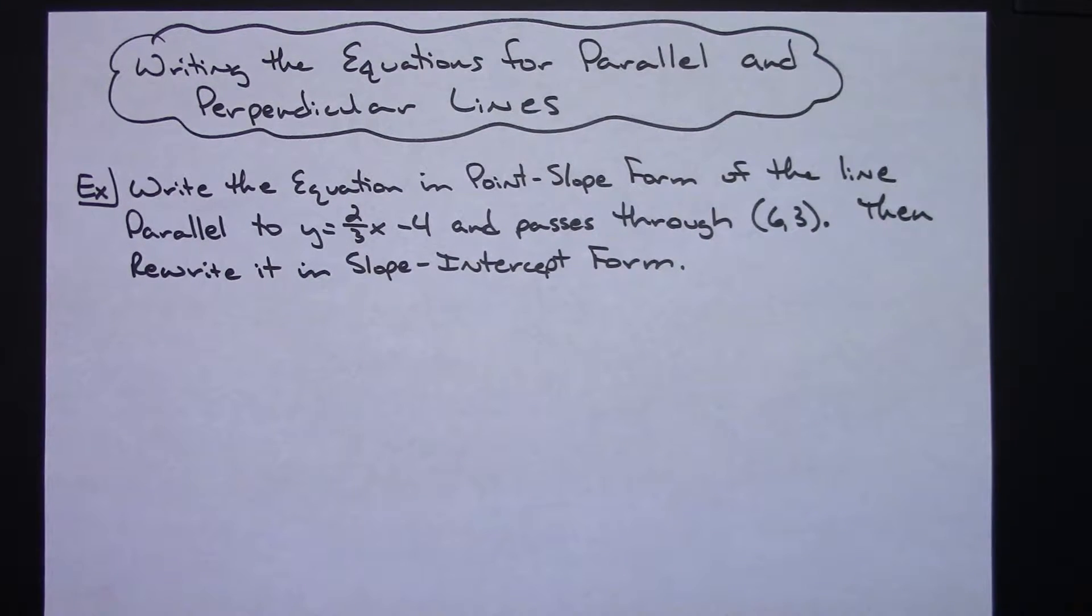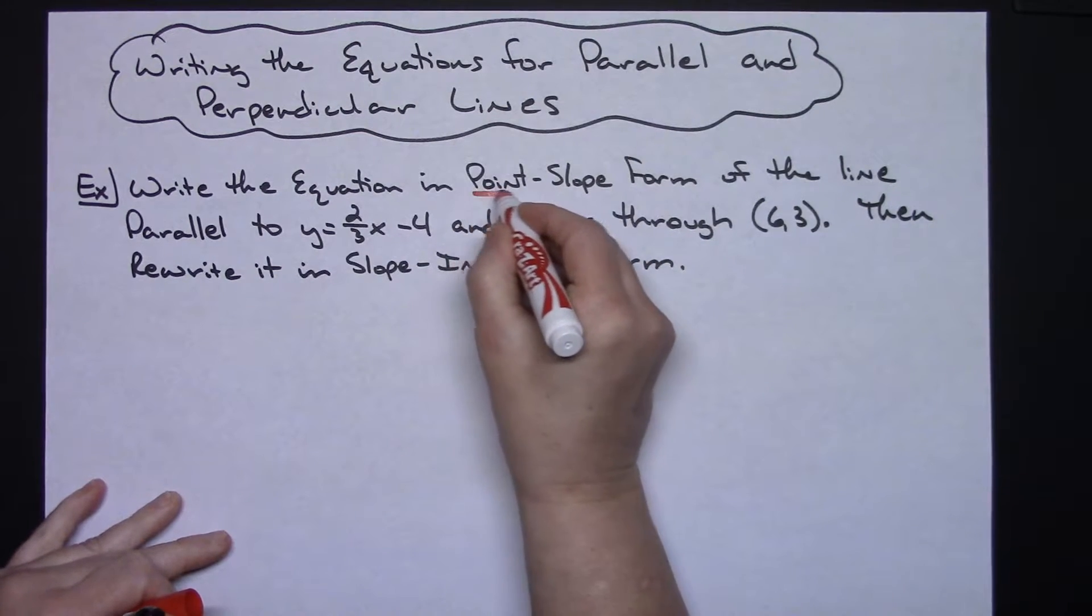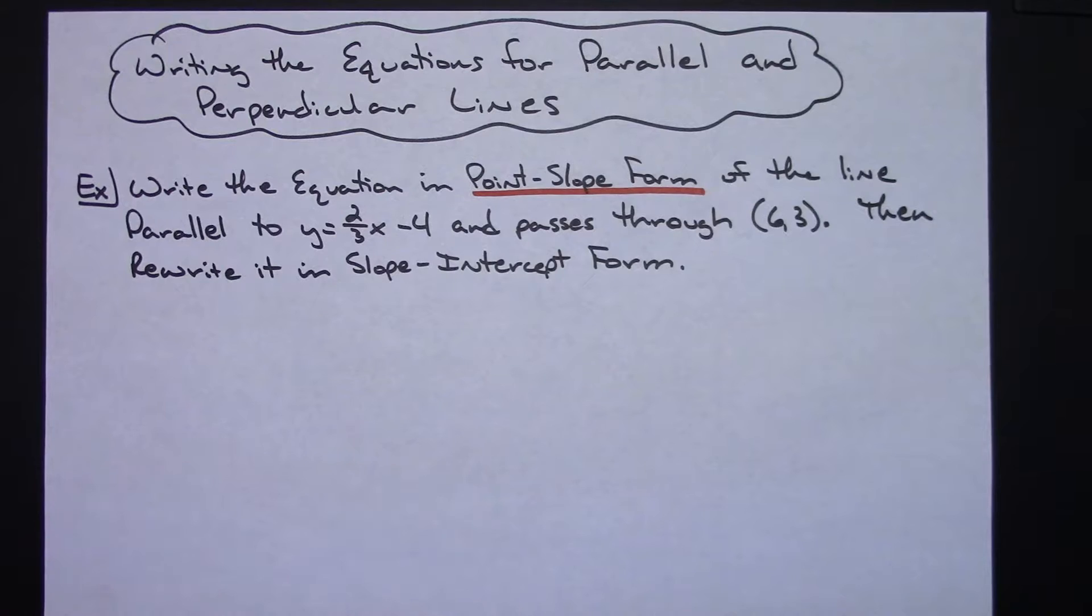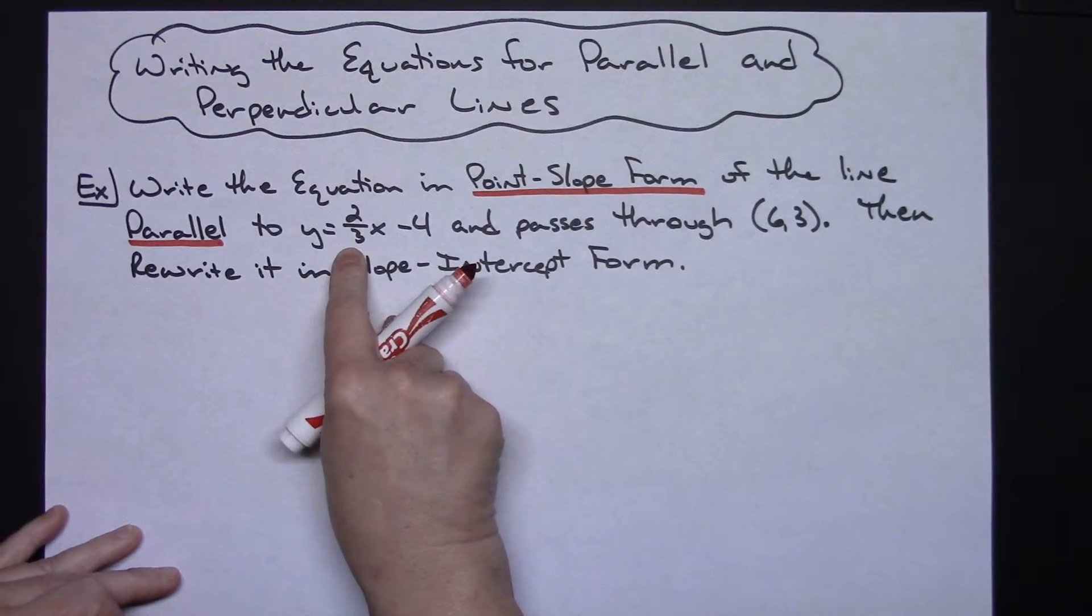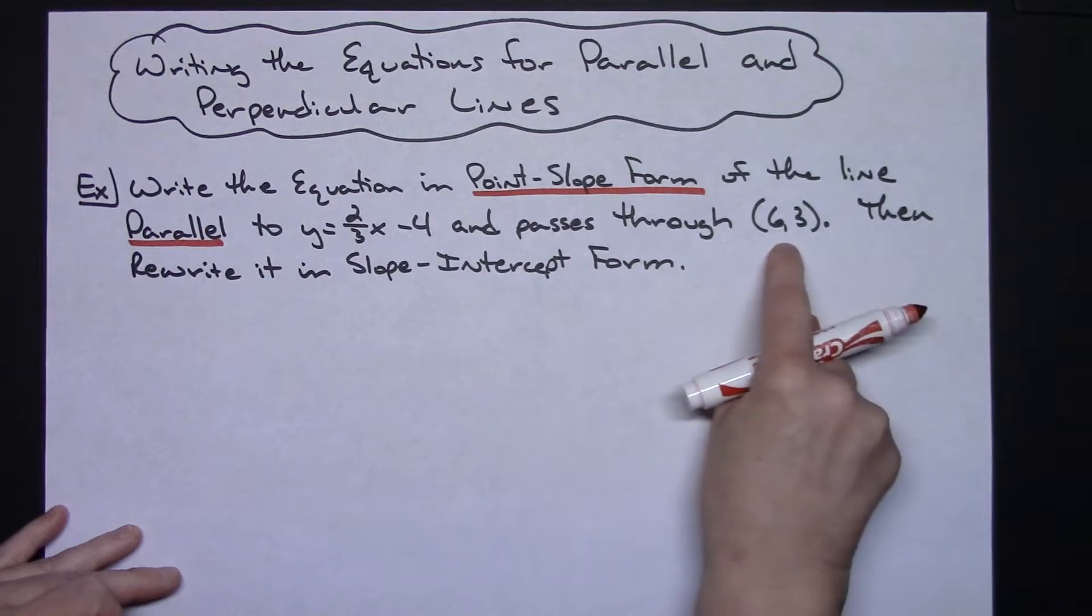On this first example here it says write the equation in point-slope form. So we're going to write in point-slope form of the line that is parallel to y equals two-thirds x minus four and passes through six three.